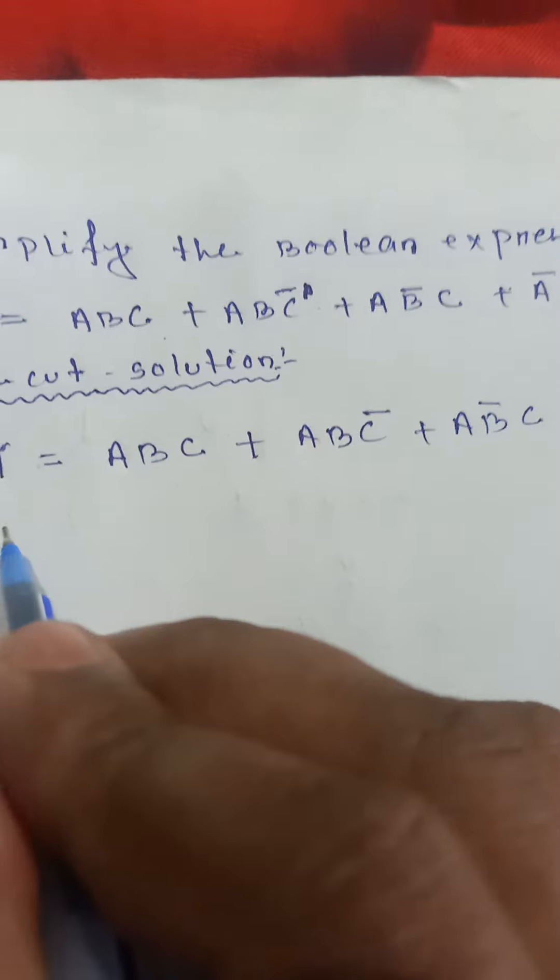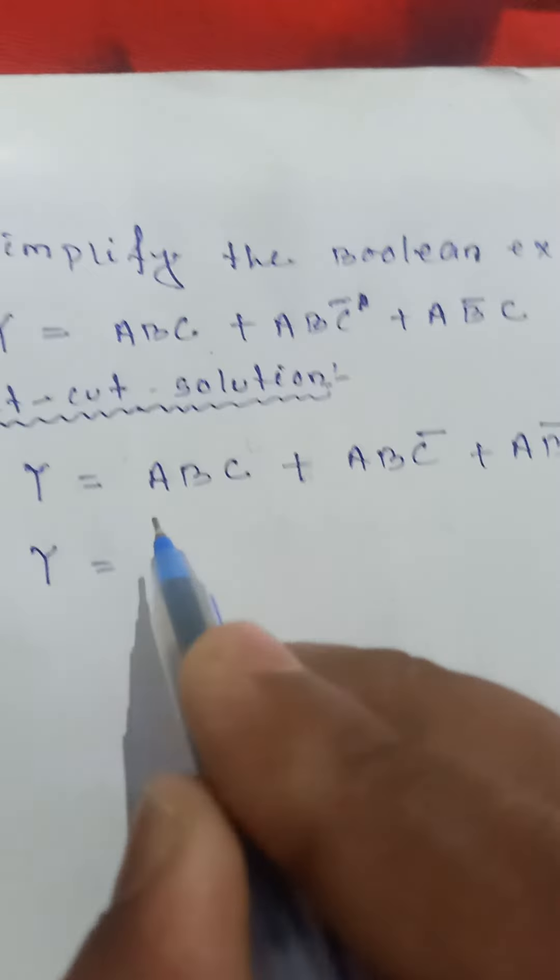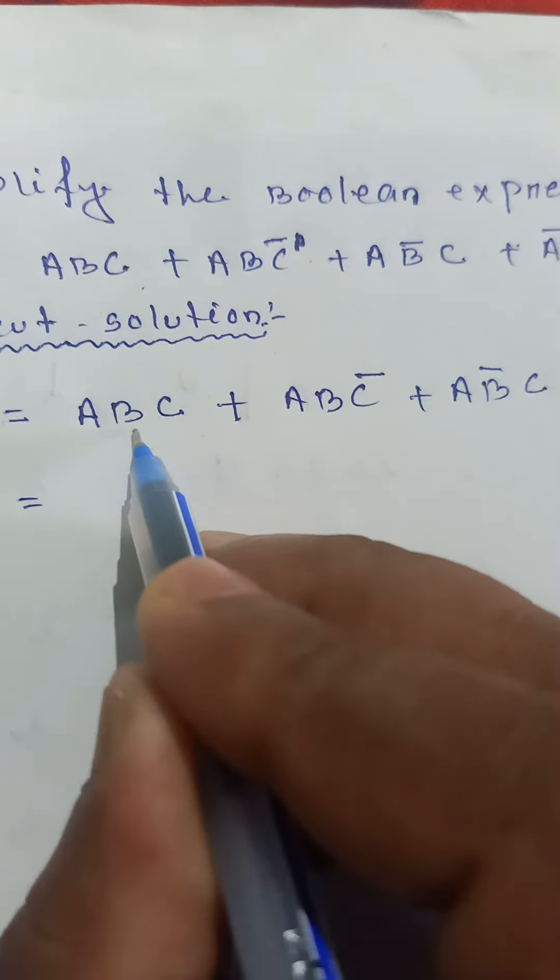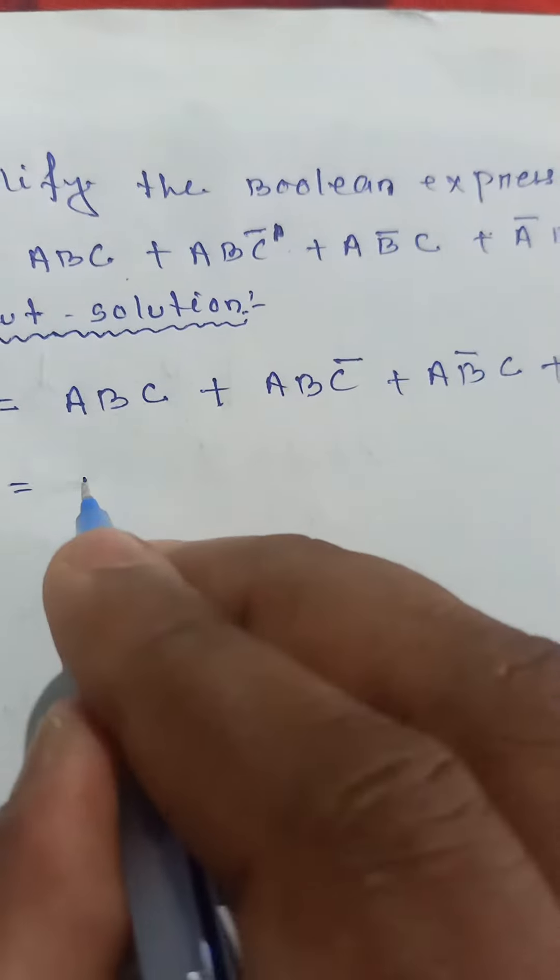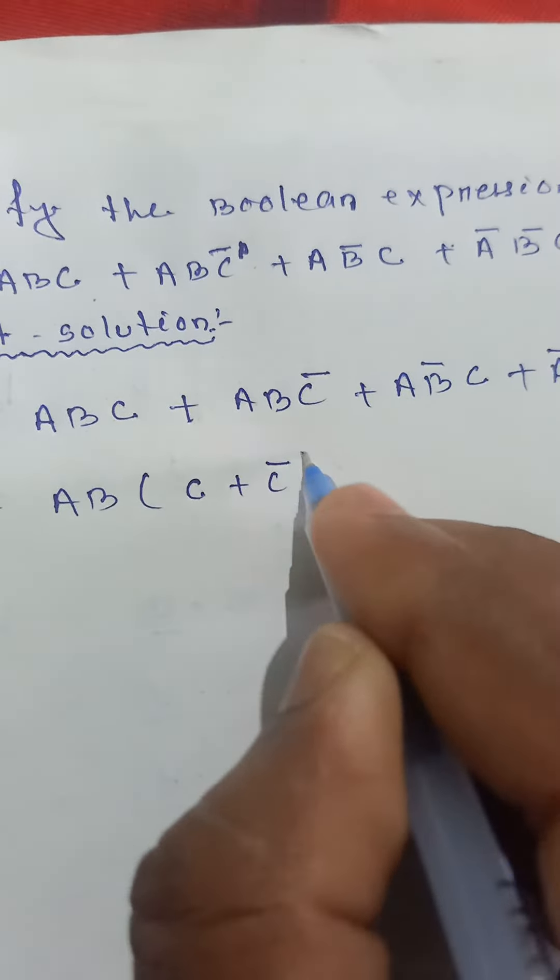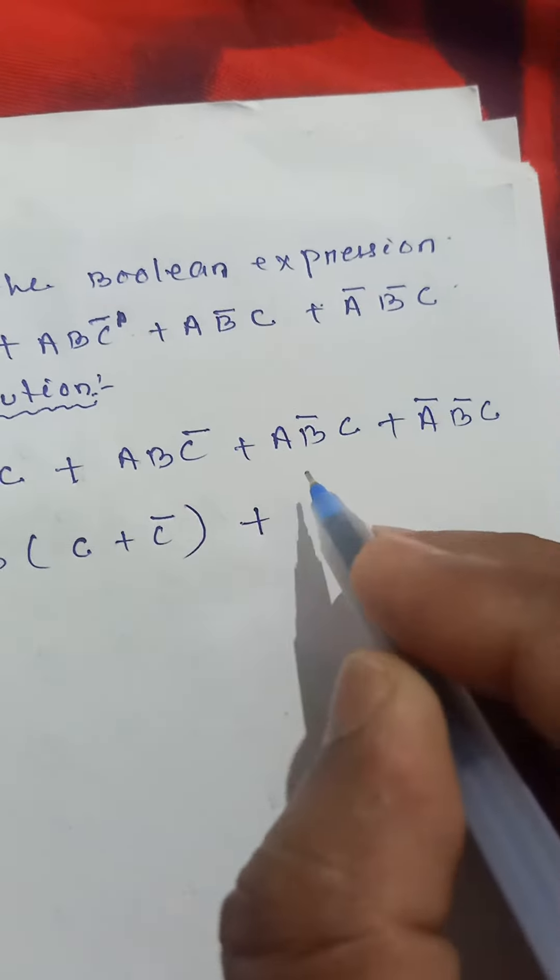So, the first expression here: AB is taking common. Here AB and also AB, now AB is taking common, so C plus C bar is left in this expression.